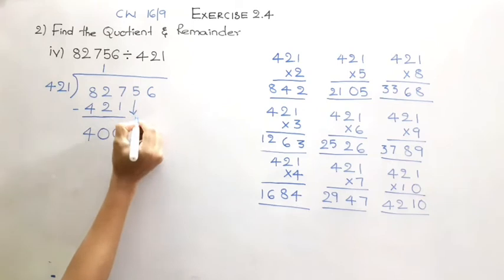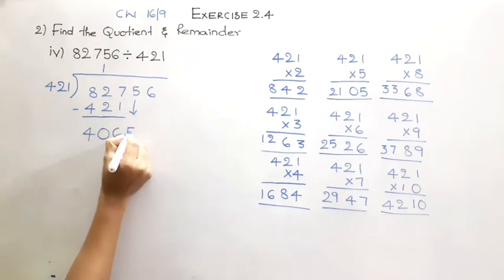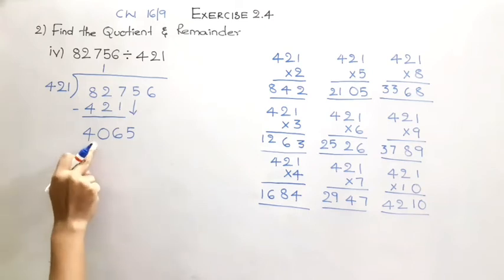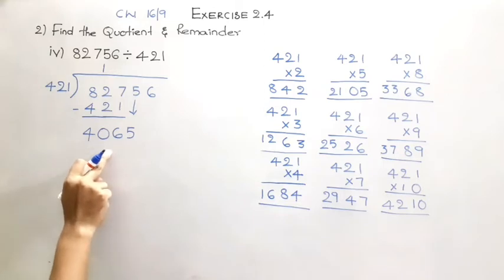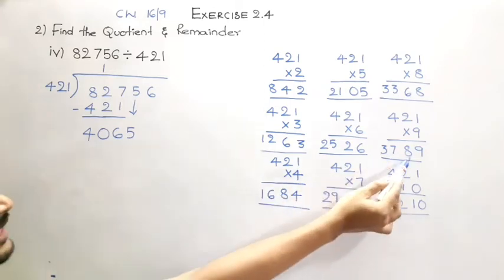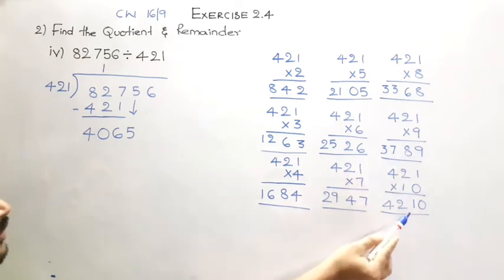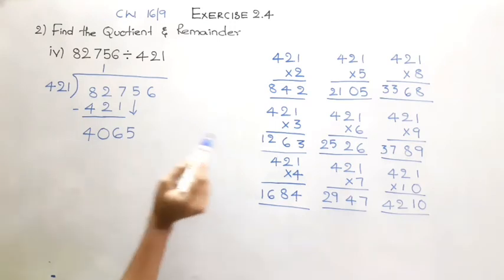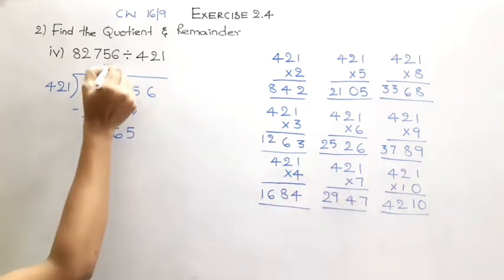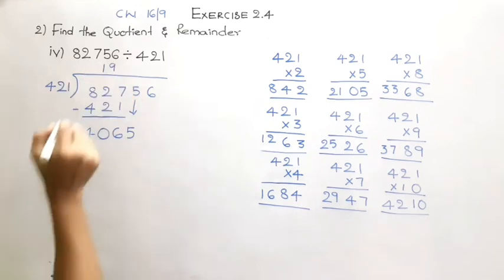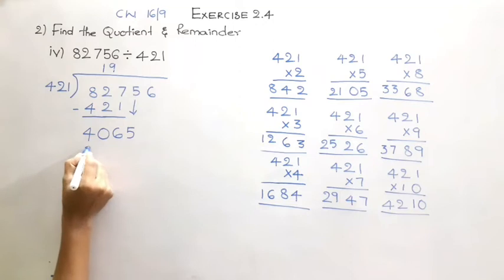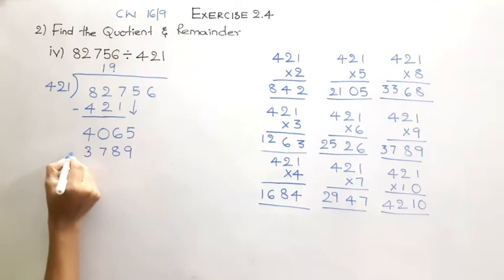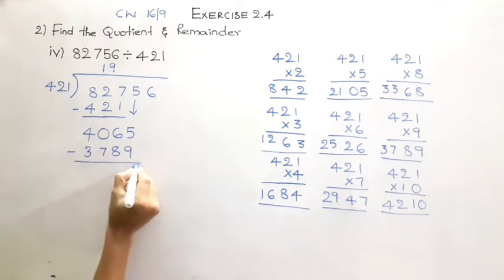We'll drop the next digit, which is 5, making it 4065. Now let us check the table for the value which is very close to 4065. At 9 we have 3789, so we can take this because 10 times is very much greater than 4065. Hence we are going to use 9 times. 421 times 9 is 3789.